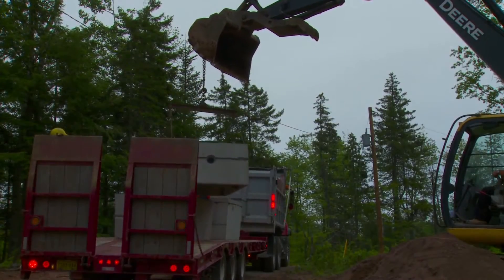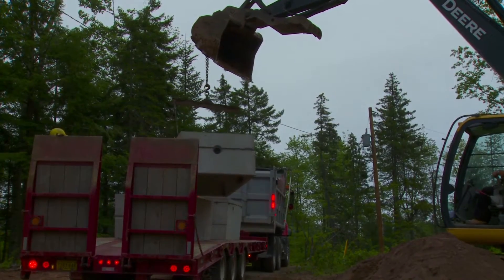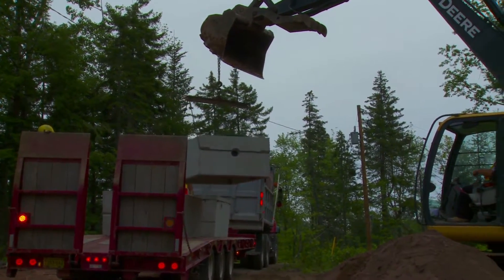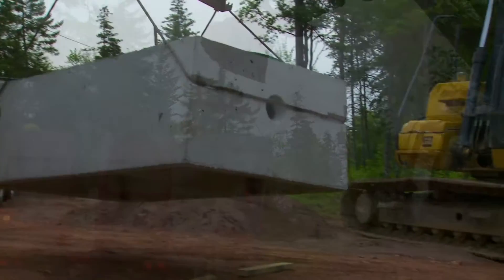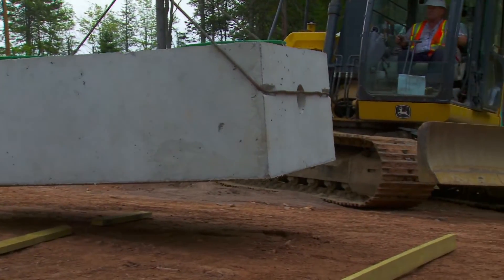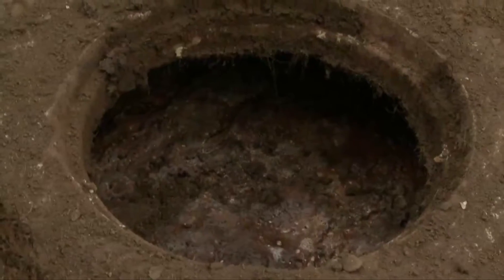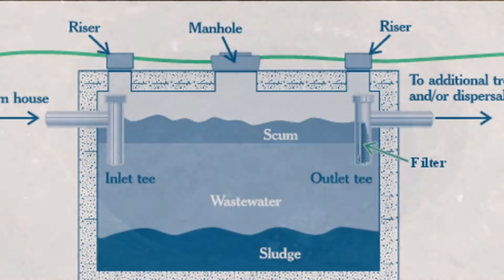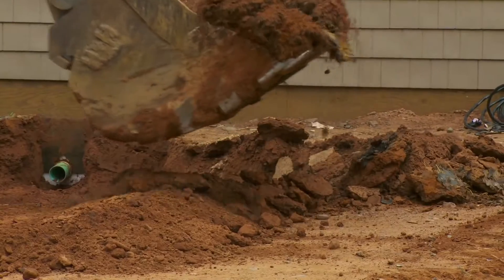The septic tank is a buried watertight container, typically made of concrete, fiberglass, or plastic. The purpose of the tank is to allow solids to settle to the bottom, and oils and greases to float to the top. It also allows partial breakdown of the solid material.